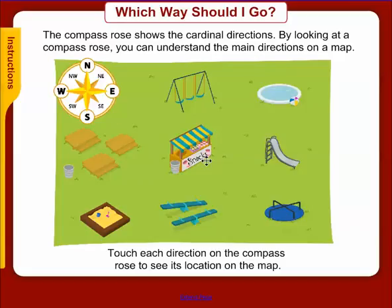For example, if we start here at this snack stand, you could see that the swing set is north of the snack stand, the slide is east from the snack stand, the teeter-totters are south of the snack stand, and the picnic tables are west.